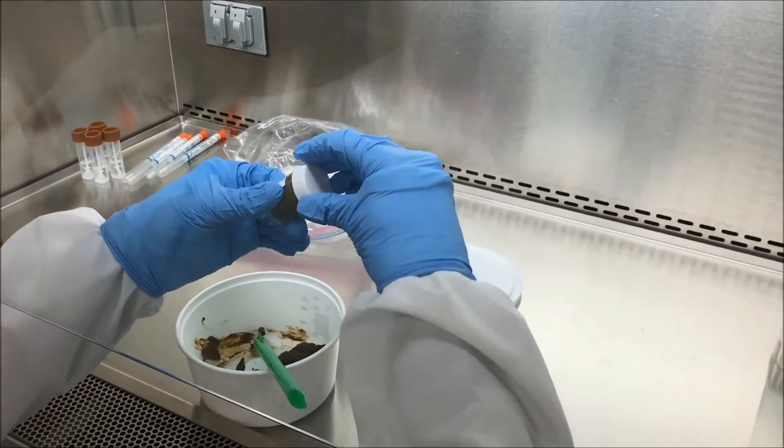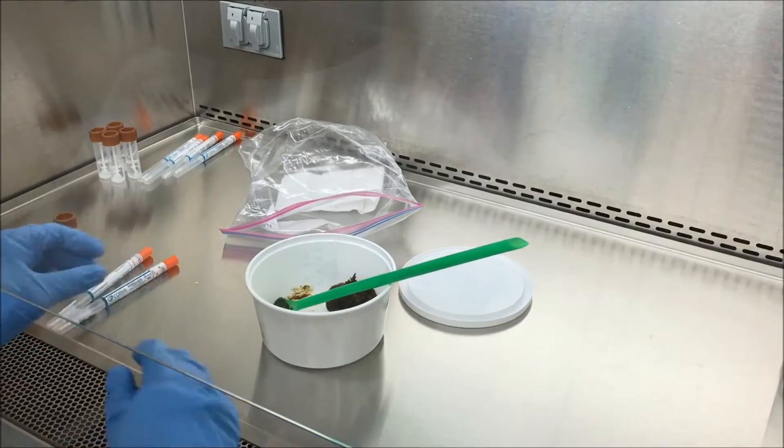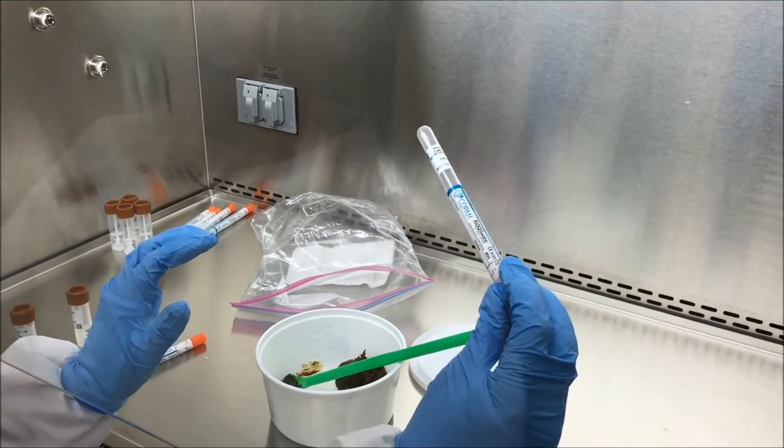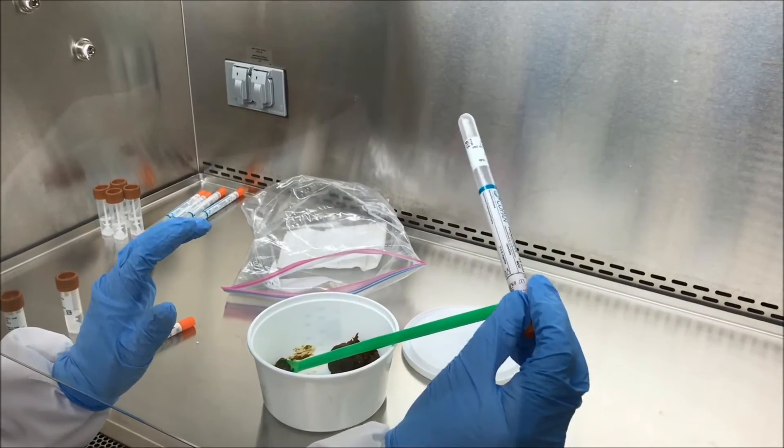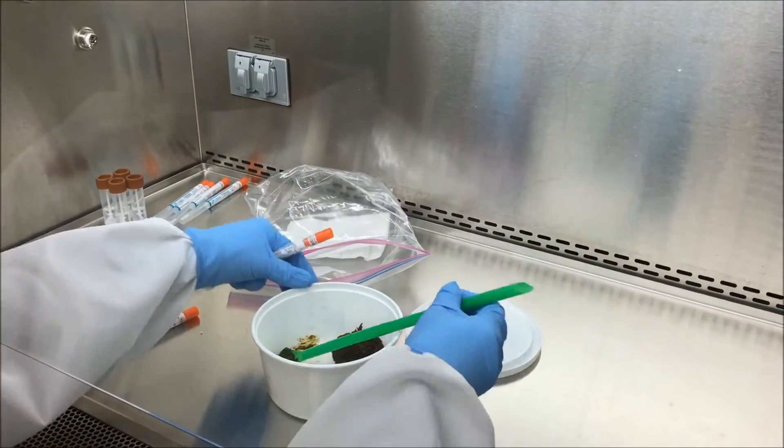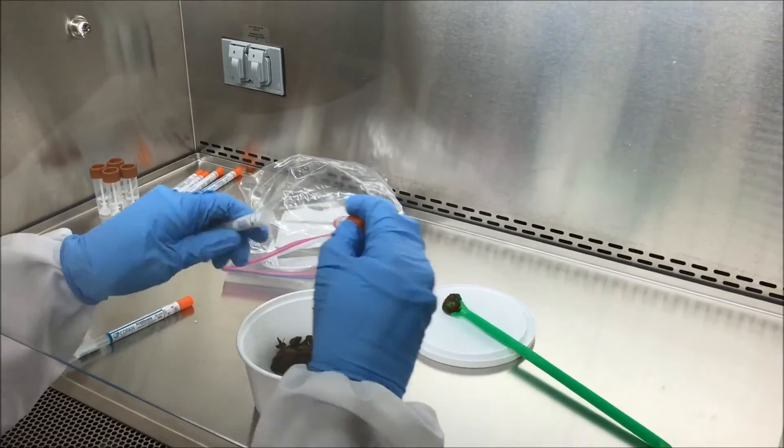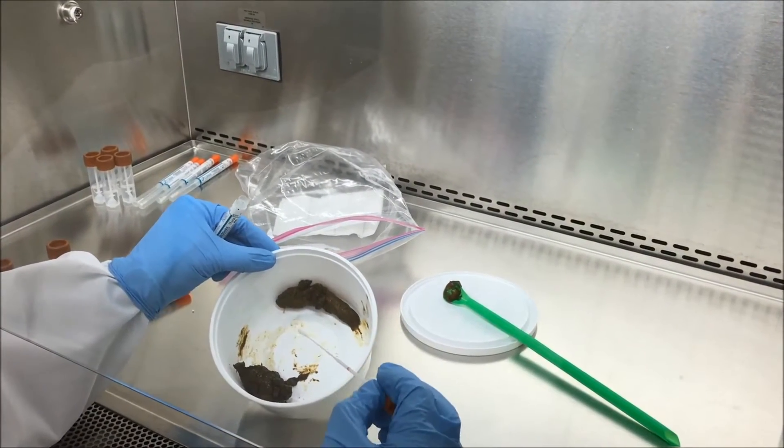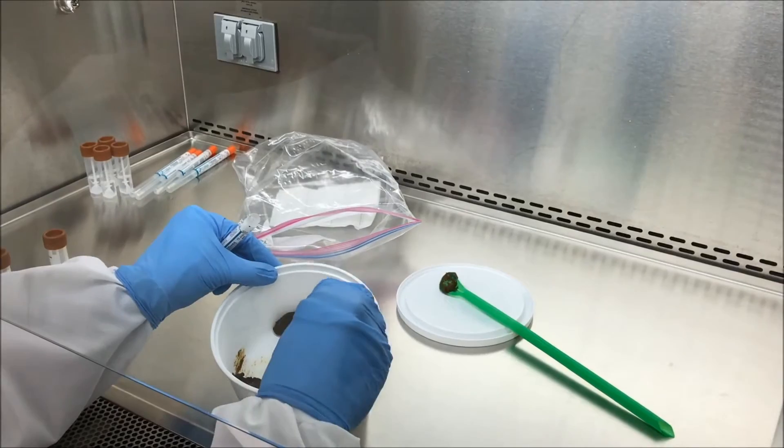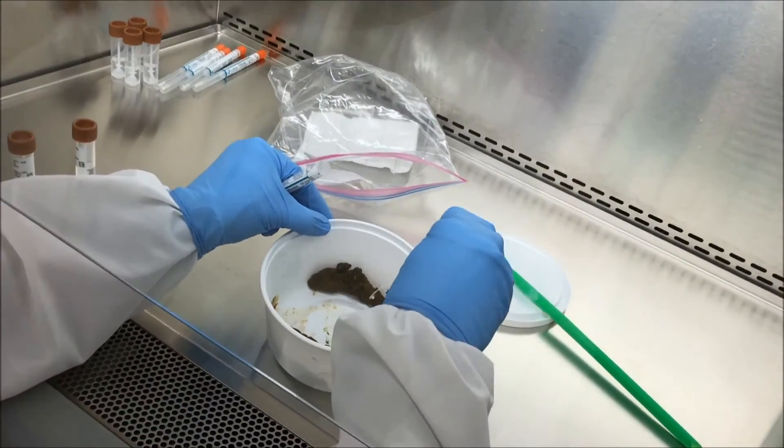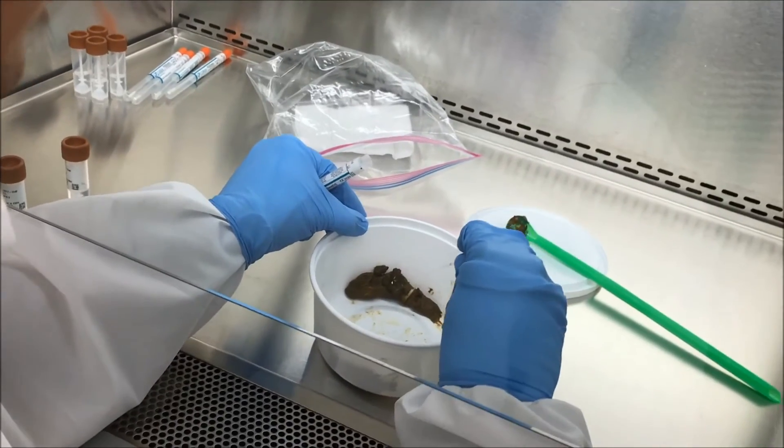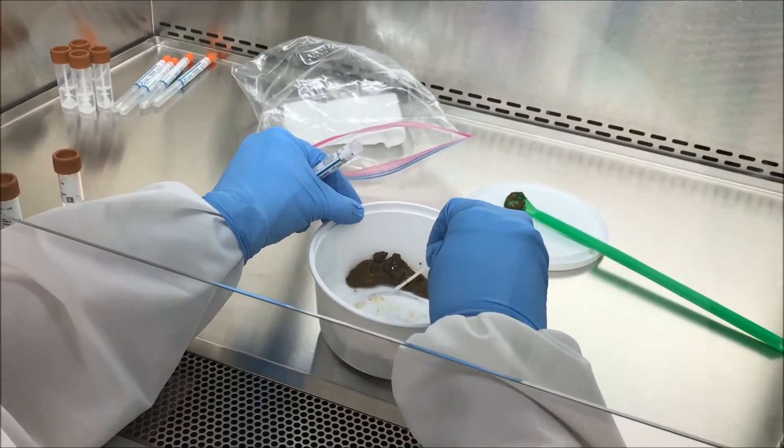So once that's finished, we take our swabs. These are the swabs that we use for DNA extraction in our microbiome analyses. This poop's interesting because half of it's hard and half of it's pretty soft and pliable. We try to go to a good part of it and swab as much stool as we can on the swab as possible.